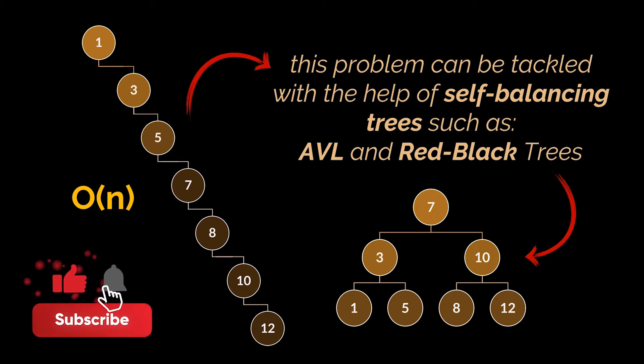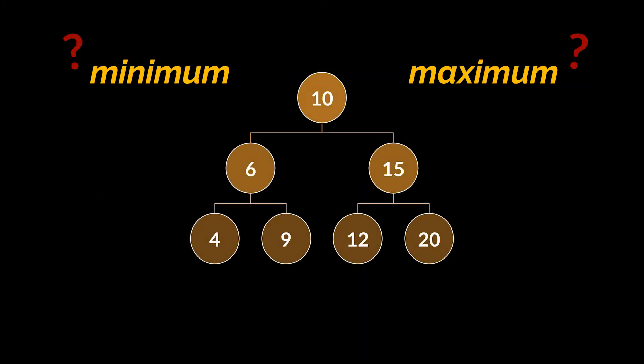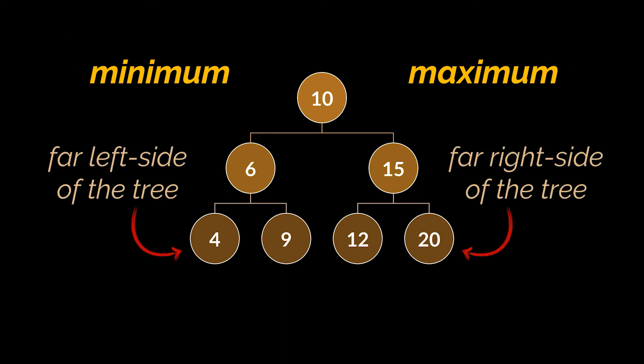During the previous example, we covered one of the operations offered by binary search trees, and it is retrieving an item by value. Now, what if I want the minimum or maximum value stored inside the tree specifically? Where should I look? Well, because every left node is smaller than its parent, and every right node is bigger than its parent, the minimum element is stored to the far left side of the tree, and the maximum is stored to the far right side. Now, these nodes do not magically appear inside a tree — we have to insert them, and inserting an element is the next operation on our list.